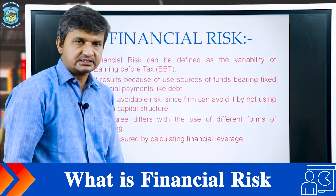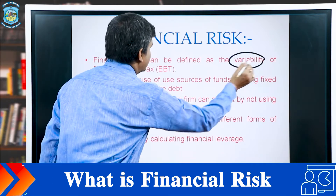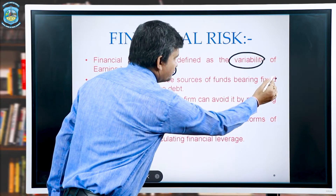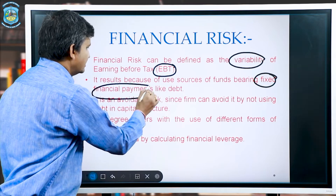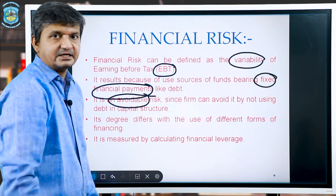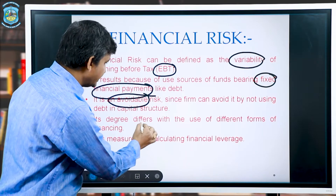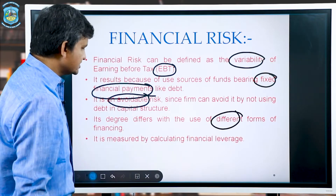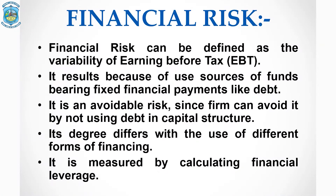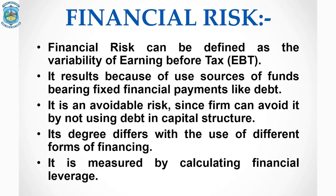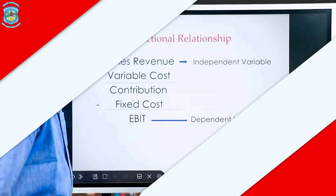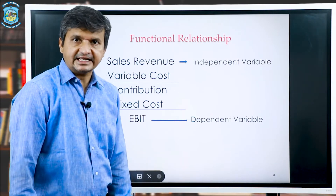Next we have financial risk, which is the variability of earnings before tax. It comes into picture because of sources bearing fixed financial payments like debentures. It is an avoidable risk — this risk can be avoided. Its degree differs with the use of different forms of financing, and it is measured by calculating financial leverage.